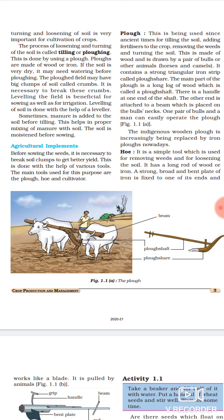Before sowing the seeds, it is necessary to break soil clumps to get better yield. Ab humne dekha ki plow ki process mein soil mein kuch clumps aa jate hai, jisko hum crumbs bhi bolte hai. Toh seeds sow karne se pehle, in clumps ko break karna zaroori hota hai, taaki soil ko hum level kar sakein. This is done with the help of various tools.